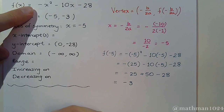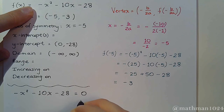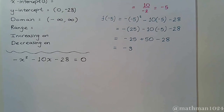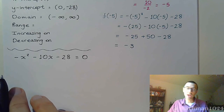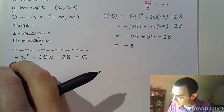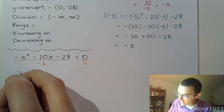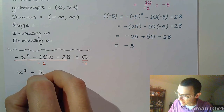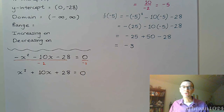Now to find the x-intercepts, we take -x² - 10x - 28 and set it equal to zero. I don't like the leading negative, so let's divide everything by -1. That gives us x² + 10x + 28 = 0, which looks much better for solving a quadratic equation.